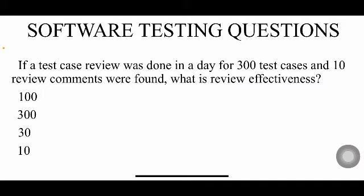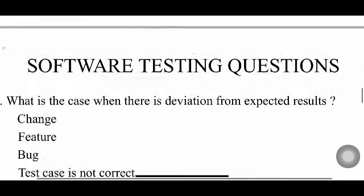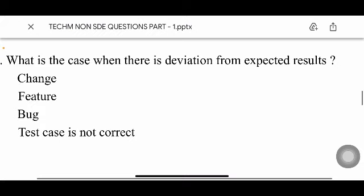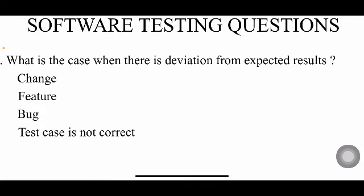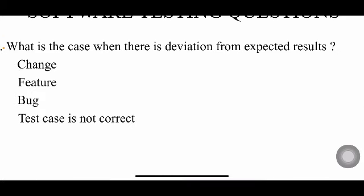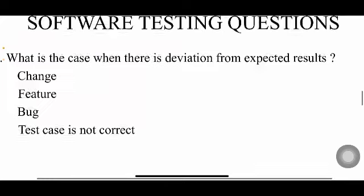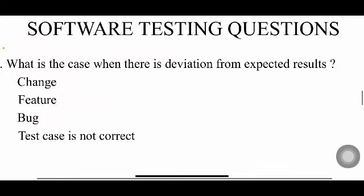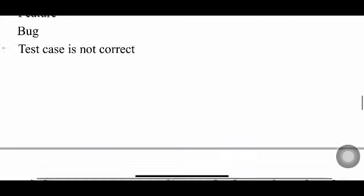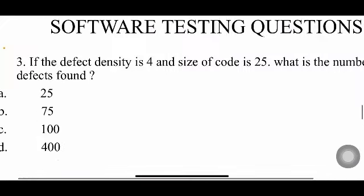So I don't want to do that. I'll just give you the questions and options, and you try to learn them. If I'm sure about any answer, I'll definitely tell you. If I'm guessing, I'll tell you that too. Next question: what is the case when there is deviation from expected results? From deviation from expected results, it may be a bug—I'm not sure about it.